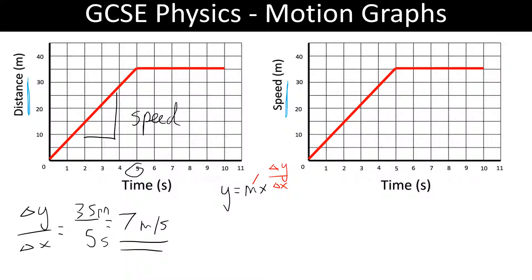You can see the gradient here is zero — there's no rise to divide the run by, so there is no velocity. And that makes sense: the distance stays constant, so the object is not actually moving.